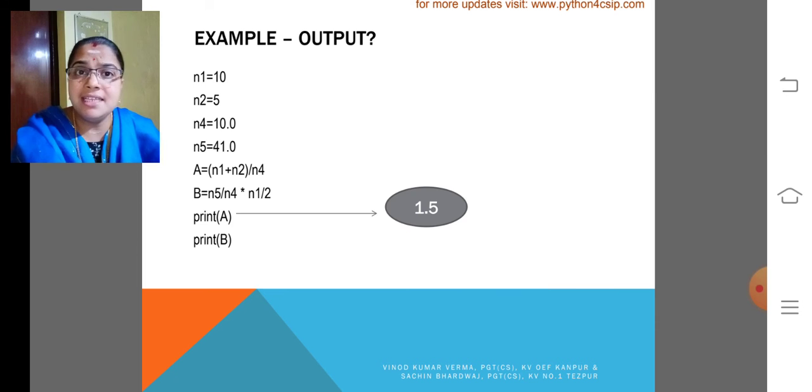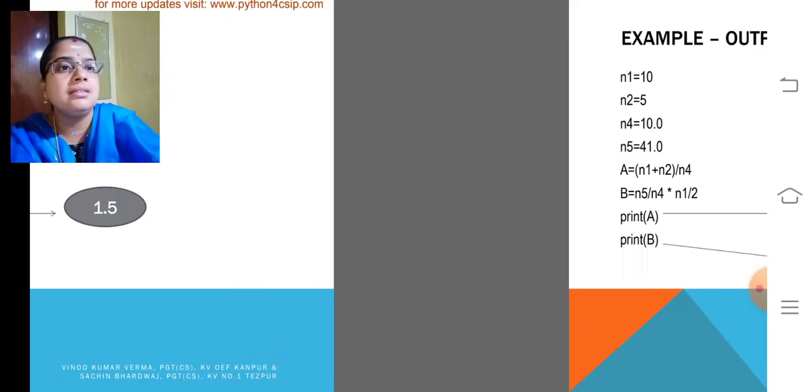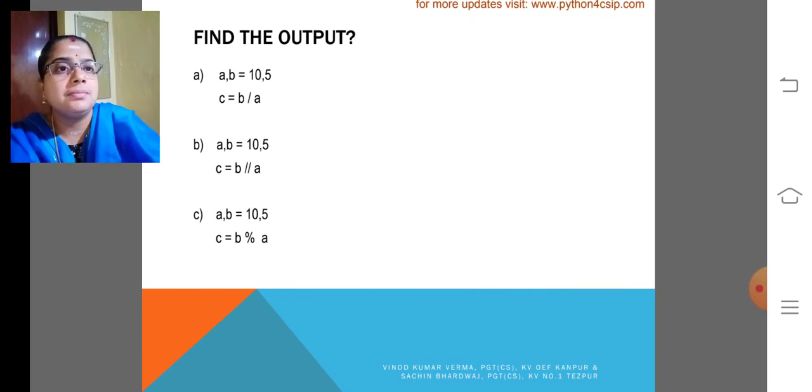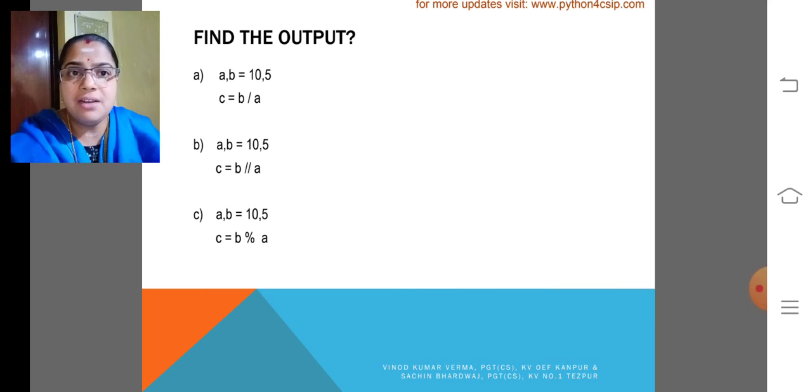We had already discussed about the implicit type conversion in the previous module. My dear children, please take a notebook or you can do this example program in your PyDroid and know about how the implicit type conversion happens.